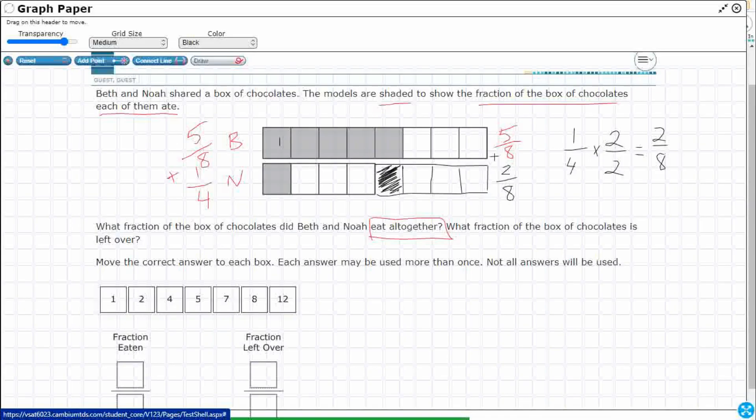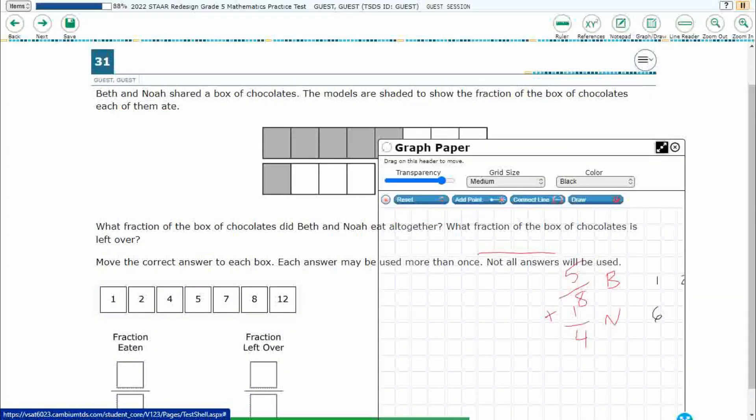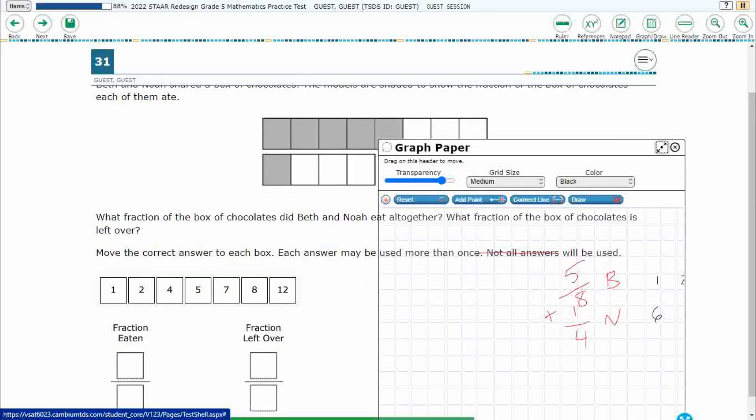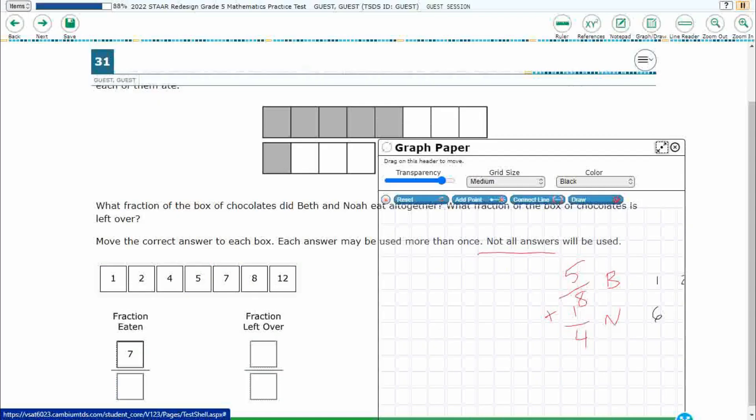Right. My 5/8 plus my 2/8. How many eighths do I've got? 1, 2, 3, 4, 5, 6, 7/8. All right. So let's build. Let's build that right here. All right. So 7/8 is how much is eaten.